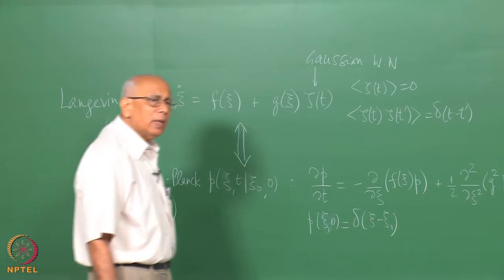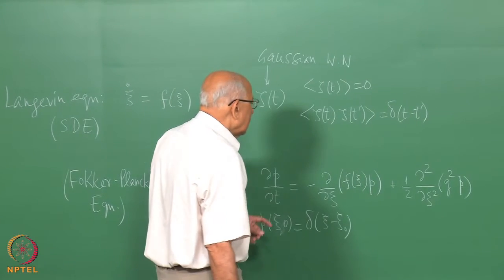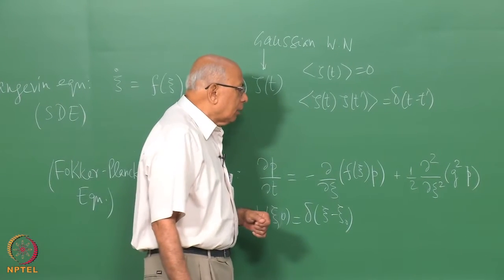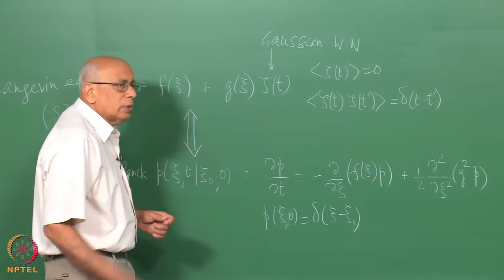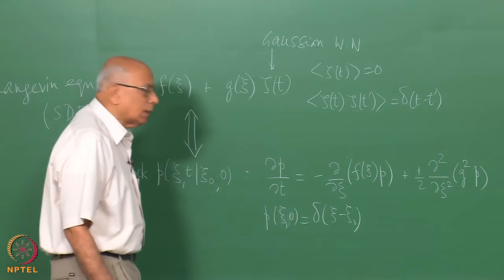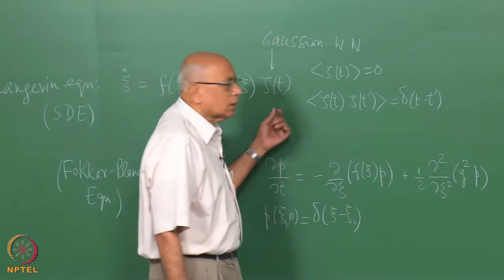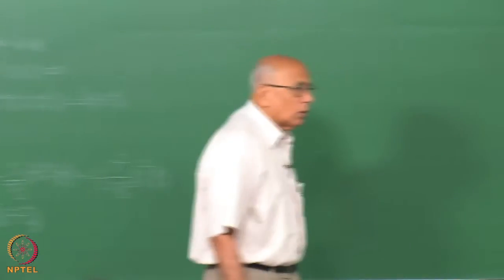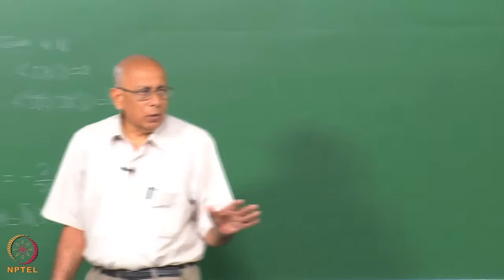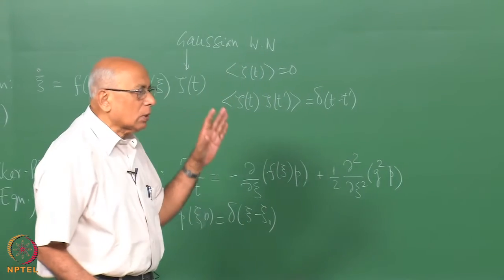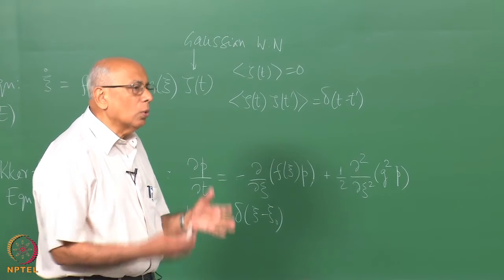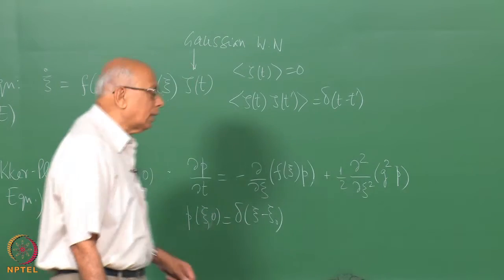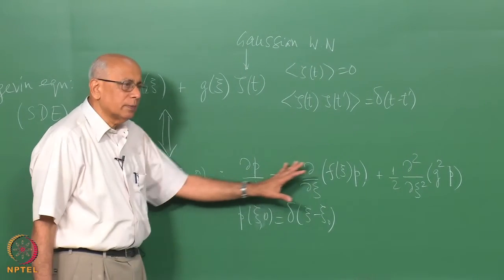We are not going to derive this — it is not very hard, actually quite straightforward. You introduce moments of something called a transition rate, or probability per unit time, and then make an expansion to show that this is what is obtained when the noise is Gaussian white noise. It is convenient to discretize time. Starting from the Chapman-Kolmogorov equation for Markov processes, you go to a master equation, then a Kramers-Moyal expansion, and show that for Gaussian white noise it reduces to this equation.